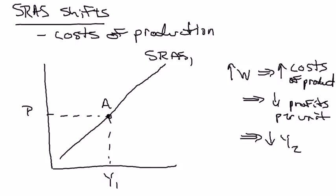Just like when we derive the short-run aggregate supply curve, increases in profits per unit of output led firms to want to produce more output; decreases in profits per unit of output are going to lead them to want to produce less. Except this time, it's not changes in the price level causing profits per unit of output to change. So here, an increase in the nominal wage leads to higher costs of production, and with the price level held constant, that decreases profits per unit of output, so firms voluntarily want to produce less — decreasing GDP.